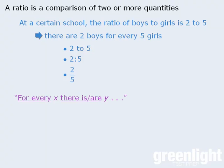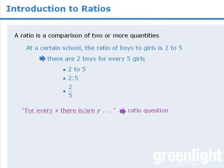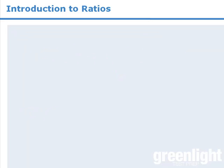In general, if we are given information that can be reworded in the form 'for every something there is something else,' we are typically dealing with a ratio question. Most ratio questions fall into two categories: equivalent ratio questions and portioning questions.